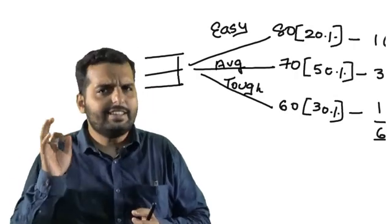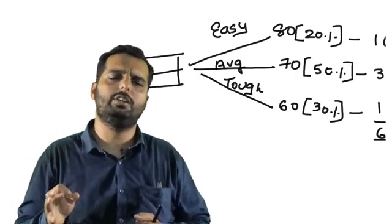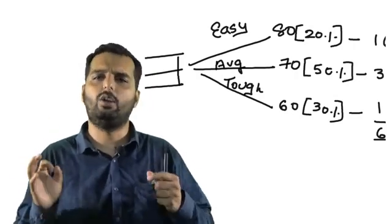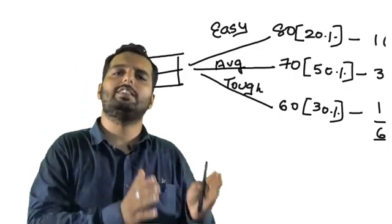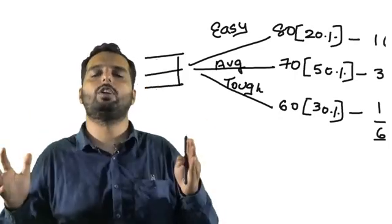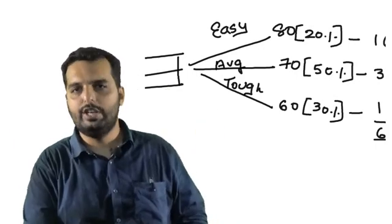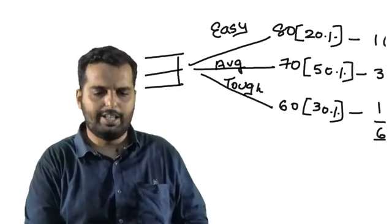Just like that, 69 marks that you got over here does not have any logic. To create logic out of the 69 marks, we do something what is known as standard deviation. So, let us go to the next page now.